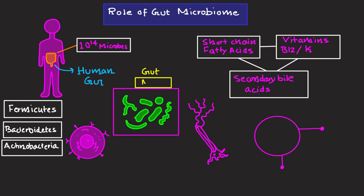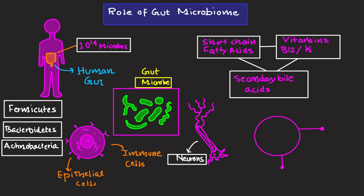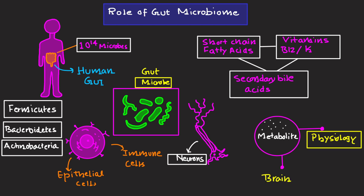The gut microbiome interacts with epithelial cells, immune cells, and afferent neurons, producing metabolites that impact both peripheral physiology and brain function.